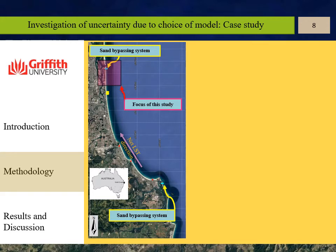The average long-term net northward littoral drift of 500,000 cubic meters per year for the southern Gold Coast and 635,000 cubic meters per year for the northern Gold Coast have been reported. Additionally, two of the largest sand bypassing systems have been installed at the south and north of Gold Coast to mitigate the interruption of longshore drift caused by different reasons.